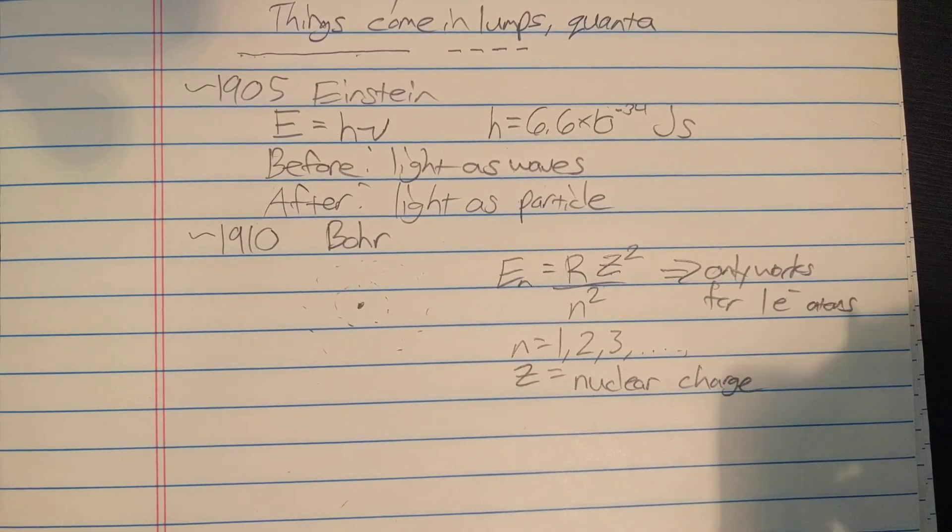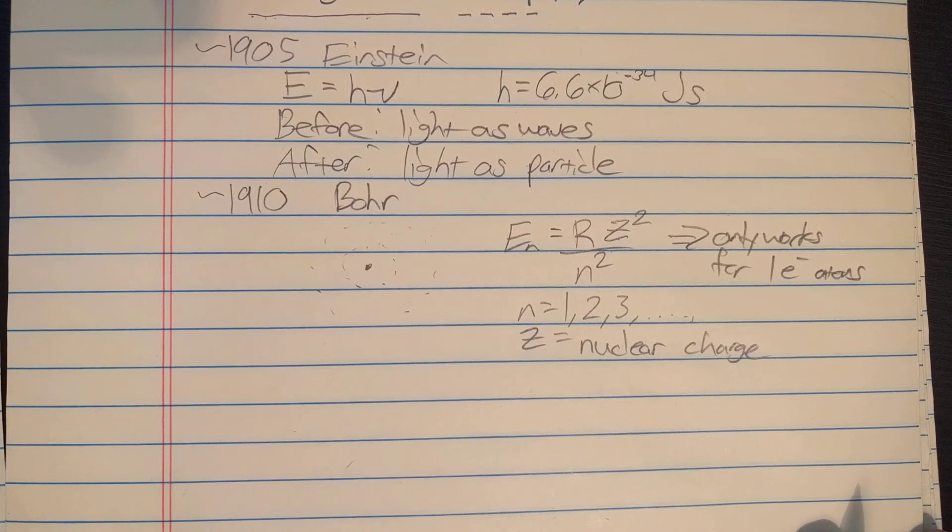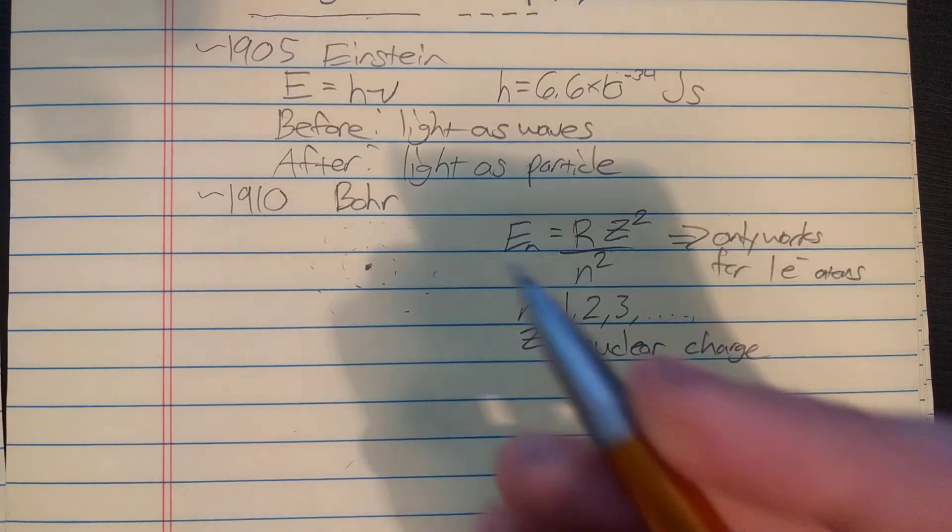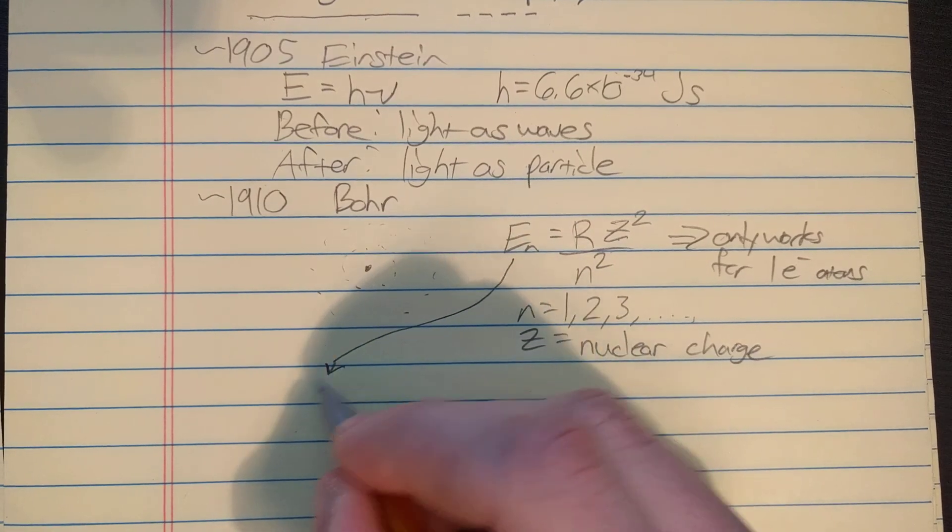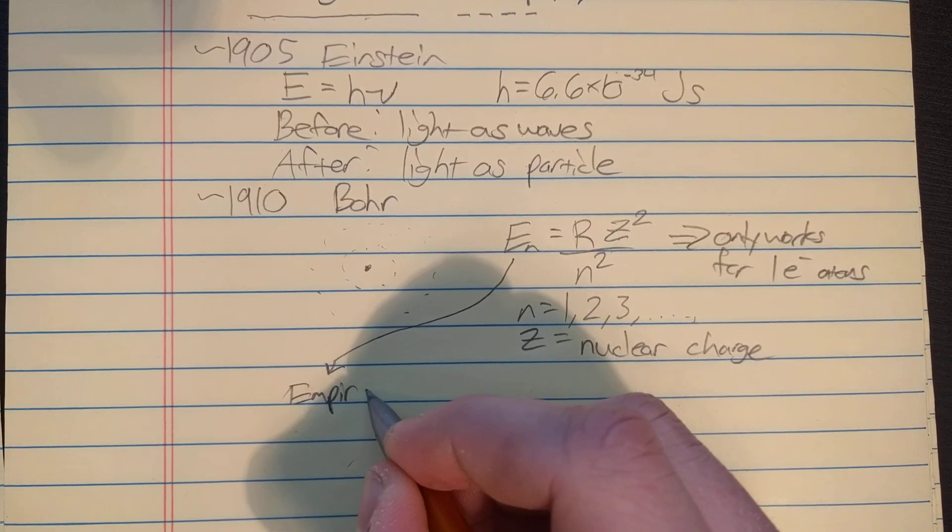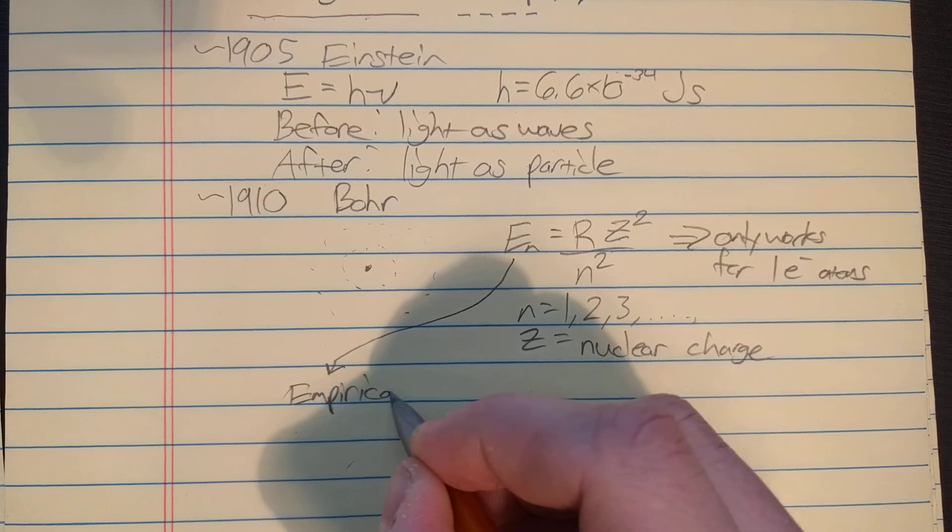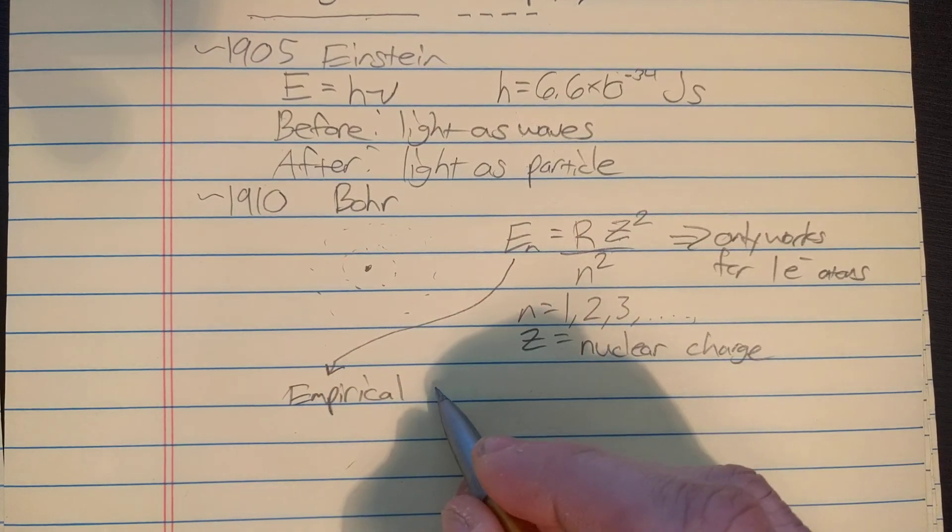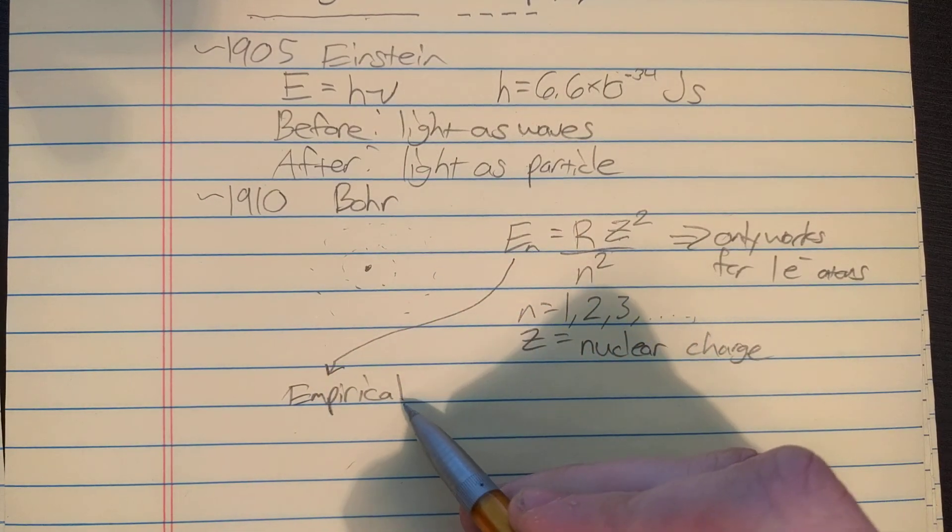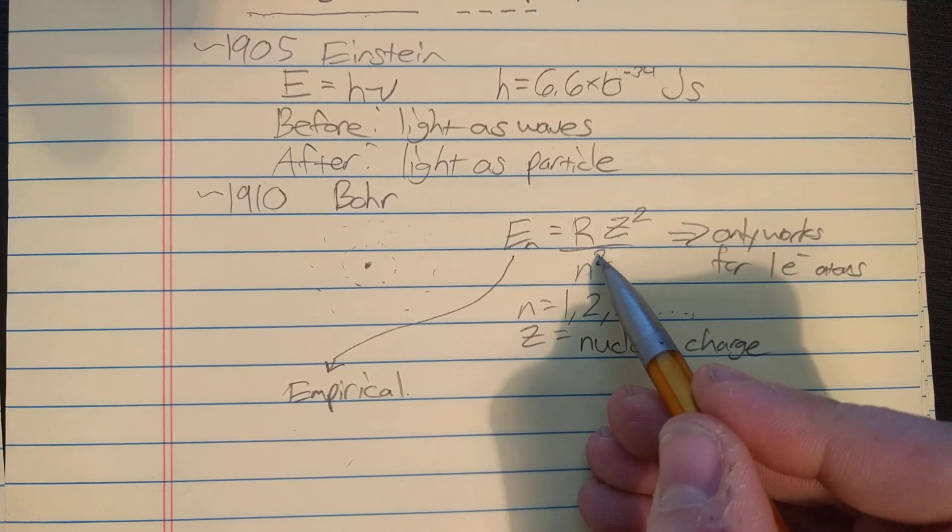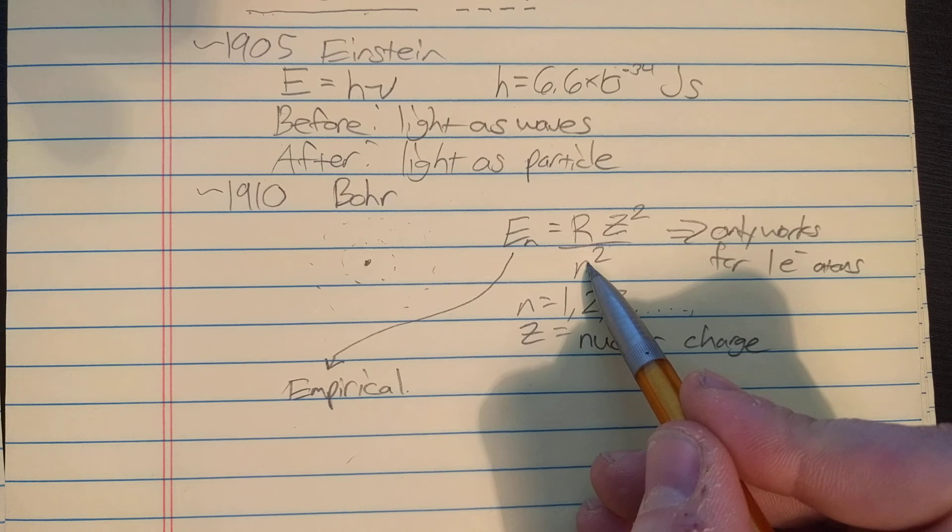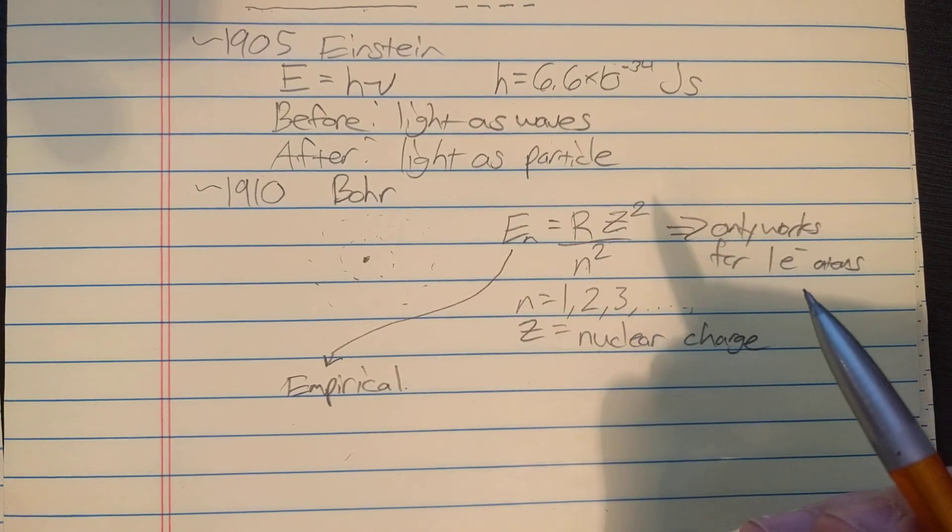This formula was empirical, mostly in nature, which means it came from experiment. Using the results of the experiment, scientists guessed the form, this form here, and it turned out to be true, and Bohr explained why.